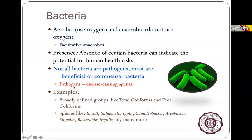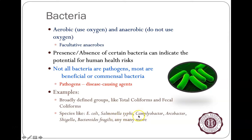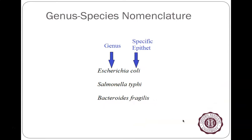Some bacteria are good but get a bad reputation because we use them as indicators, or because a few members of their group may make people sick. With regards to indicator bacteria, examples include total coliforms, fecal coliforms, and E. coli as a great example of a fecal indicator bacteria. There are also pathogens like Salmonella typhi, species of Campylobacter, and bacteria called Arcobacter — a whole range of bacteria that can be pathogenic or have pathogenic members. There are also viruses we'll discuss.